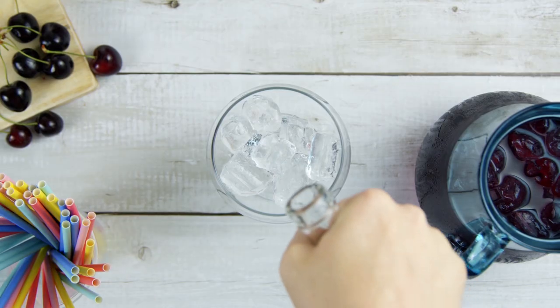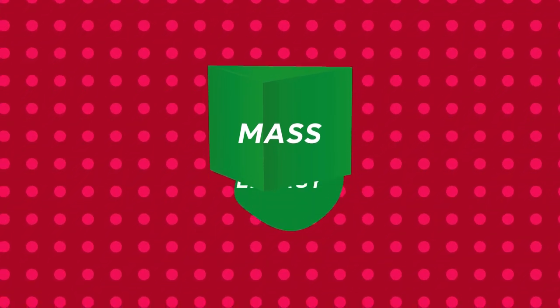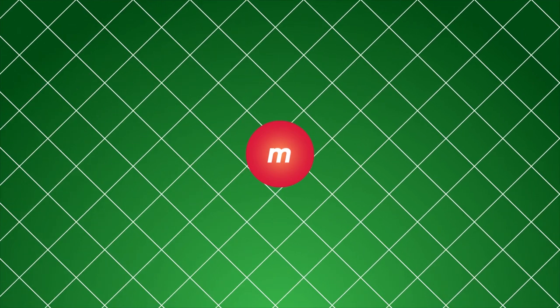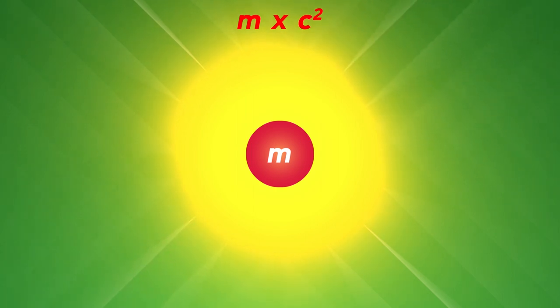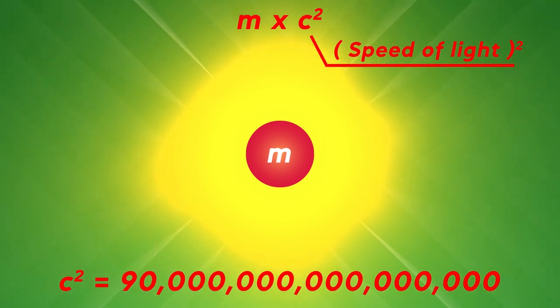Just like a block of ice can be melted into water, mass is a frozen form of energy and can be converted by the mass-energy equation. This means that even a body with very little mass could yield a huge amount of energy, as its mass will be multiplied with the constant c², which is the square of the speed of light and has a value of 90 quadrillions.